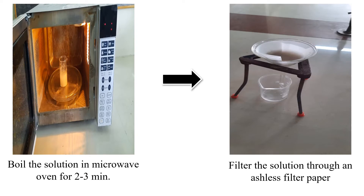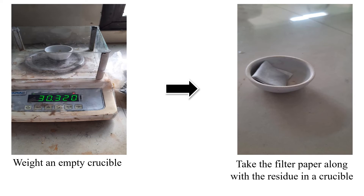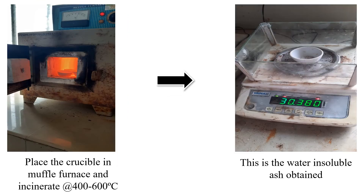Boil the solution in the microwave oven for about 2-3 minutes. Filter the solution through an ash-less filter paper. Weigh an empty crucible. Take the filter paper along with the residue in the crucible. Place this crucible in the muffled furnace and incinerate it at 400-600 degrees Celsius until whitish to greyish ash is obtained.